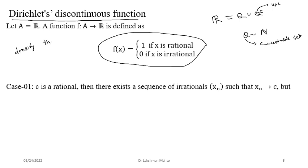The density theorem says: if you take any two distinct real numbers a and b, there always exists a real number c lying between them.